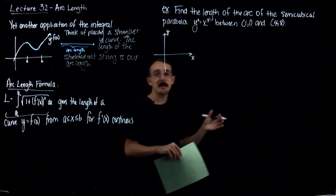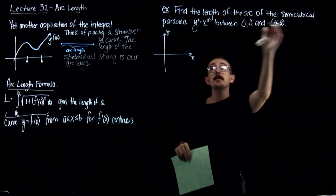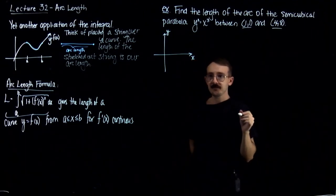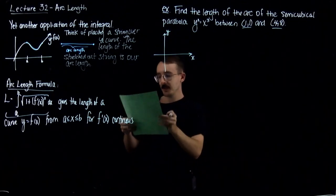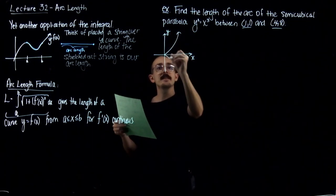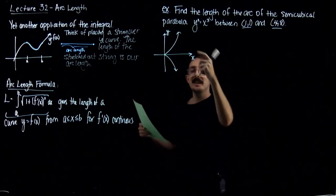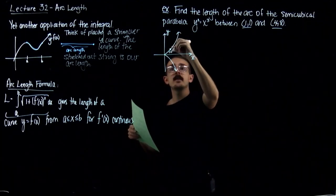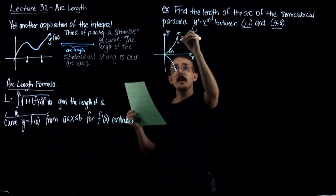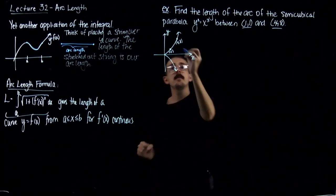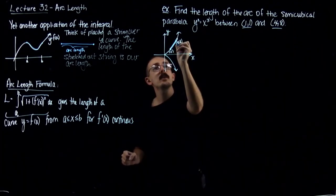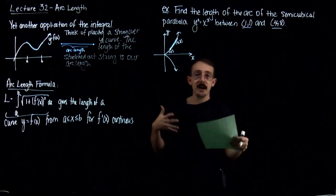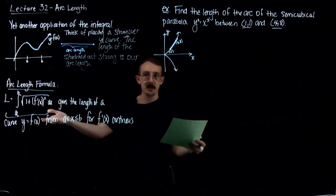Let's apply it to an example. We're going to find the length of the curve of the semicubical paraboloid y squared equals x cubed between two points. It looks like this — there's a cusp right here, mirrored on the top and the bottom. We're interested in knowing the arc length from (1,1) to (4,8). What's the length if I follow the curve between those two points?